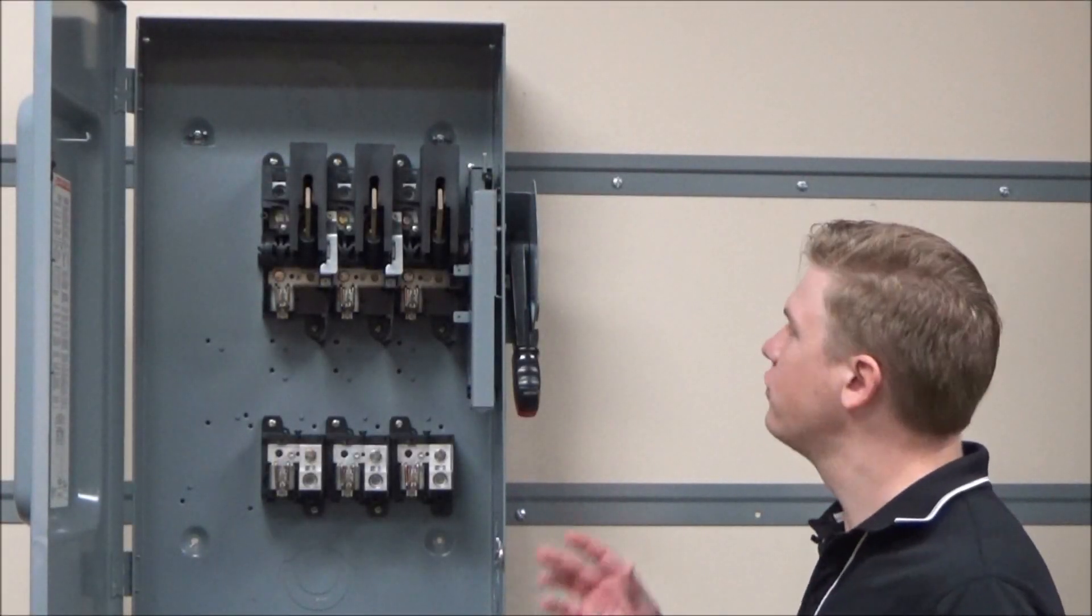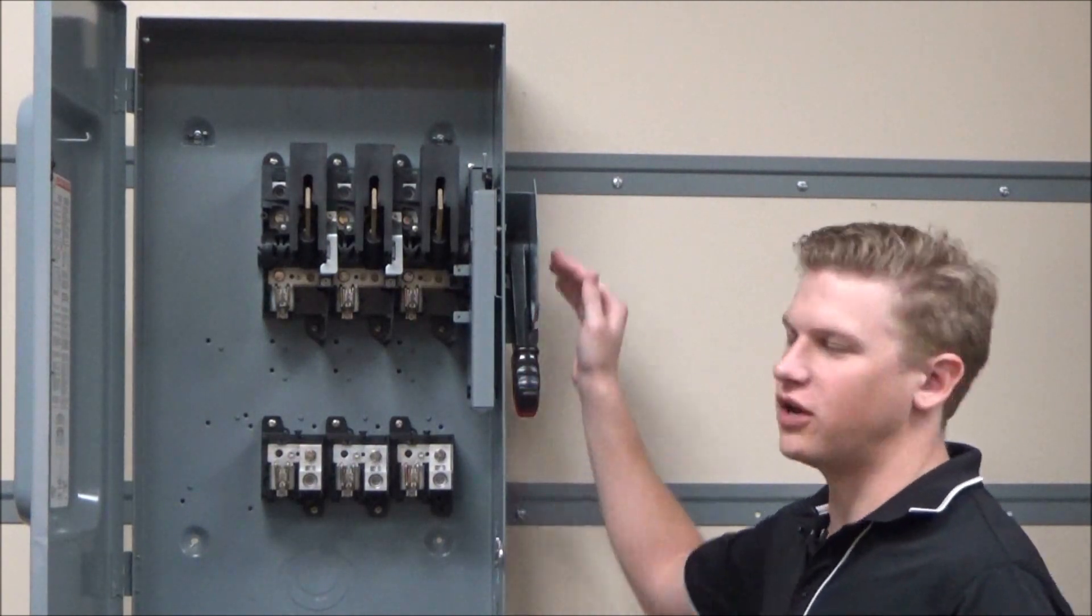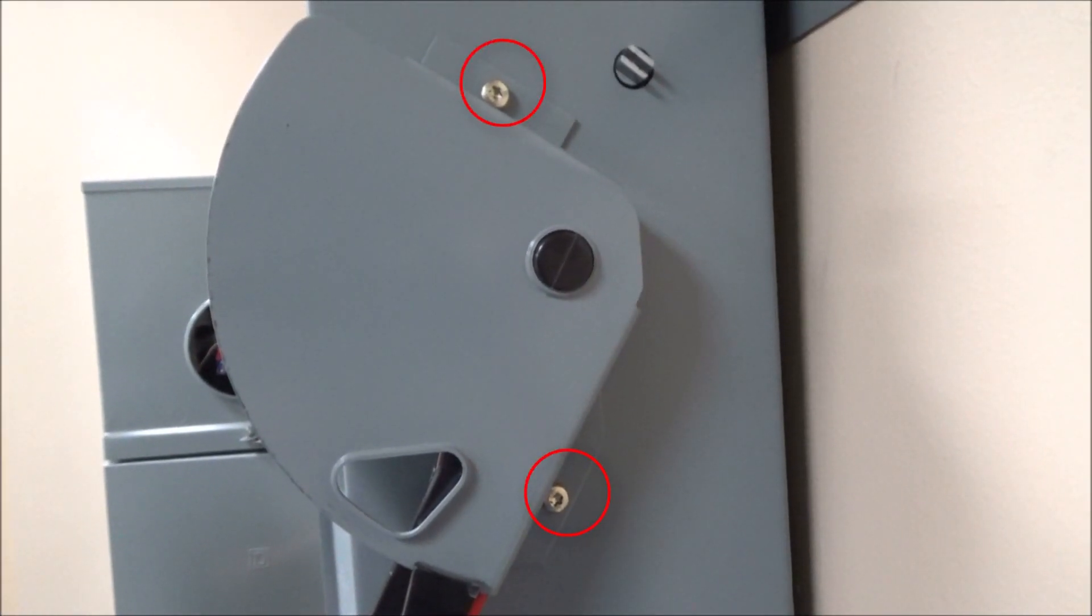First you'll remove the lock plate and handle by removing the screws on the top and bottom of the lock plate.